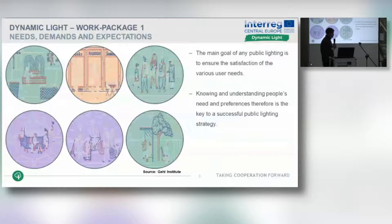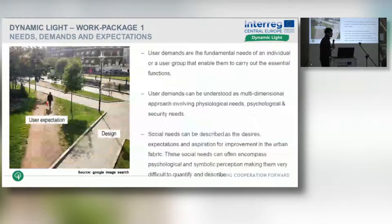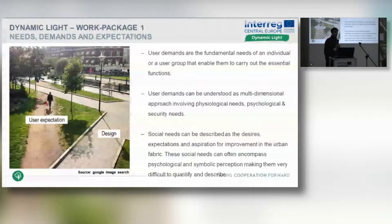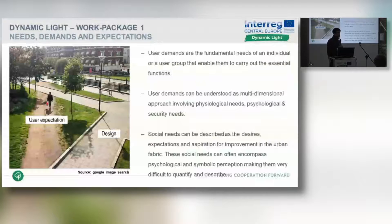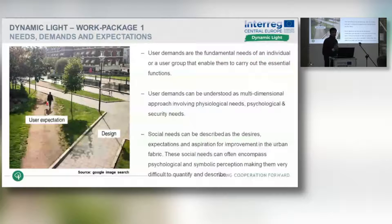Knowing and understanding people's needs and preferences is key to a successful public lighting strategy. I was lucky enough to attend a lecture from Professor Jan Gehl last year in Frankfurt. He talked about how we as architects, urban designers, and lighting designers understand human user needs — after all, we use public spaces — yet we still end up designing spaces which do not really conform to user expectations.